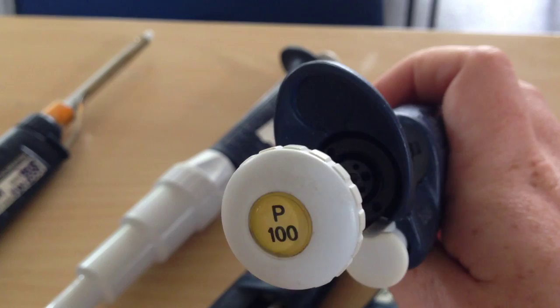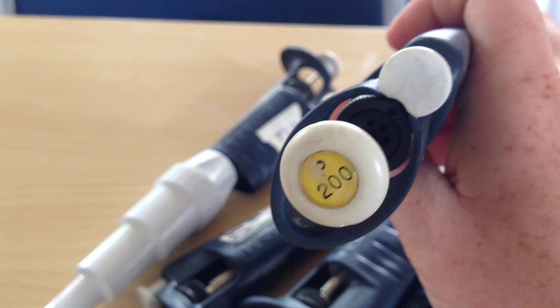So what you want to use is the smallest possible Gilson available. Then we have a P200. You can see this one is quite a lot older. You would use that for the volumes between 100 and 200 microliters.